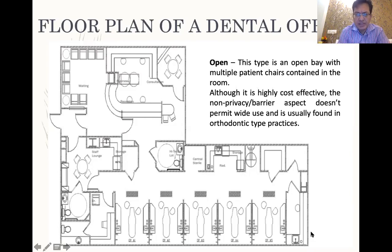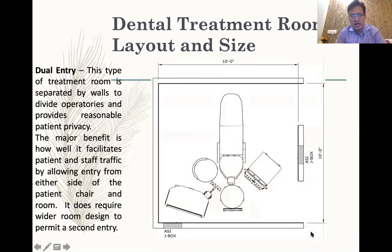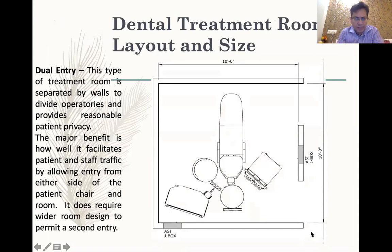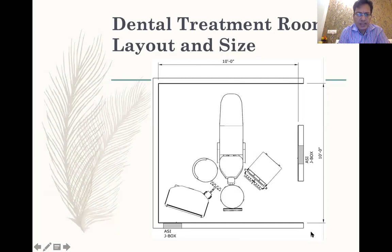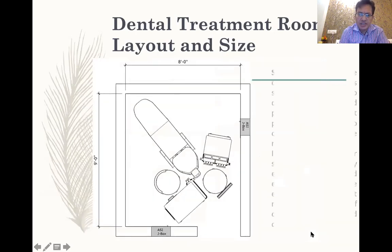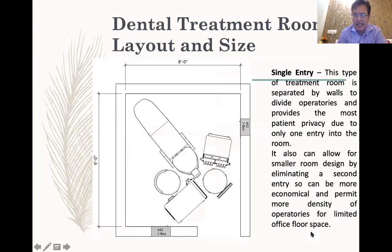For a single chair to be separate, we want privacy for the patient, and especially after the COVID outbreak, we do not want the environment of one operatory to be transferred to another. There can be a dual-entry operatory with one entry for staff and one for the patient, providing very good workability. Where space is limited, a single-entry operatory saves space, is more economical, and permits more density of operatories for limited office use.